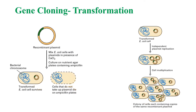The next step in gene cloning is transformation. Transformation is the transfer of DNA into a bacterial cell. During transformation, the recombinant plasmid is mixed with bacterial cells and grown on a nutrient agar plate containing the antibiotic ampicillin. Bacterial cells that contain the recombinant plasmid survive, while bacterial cells that do not contain the plasmid die on ampicillin plates.